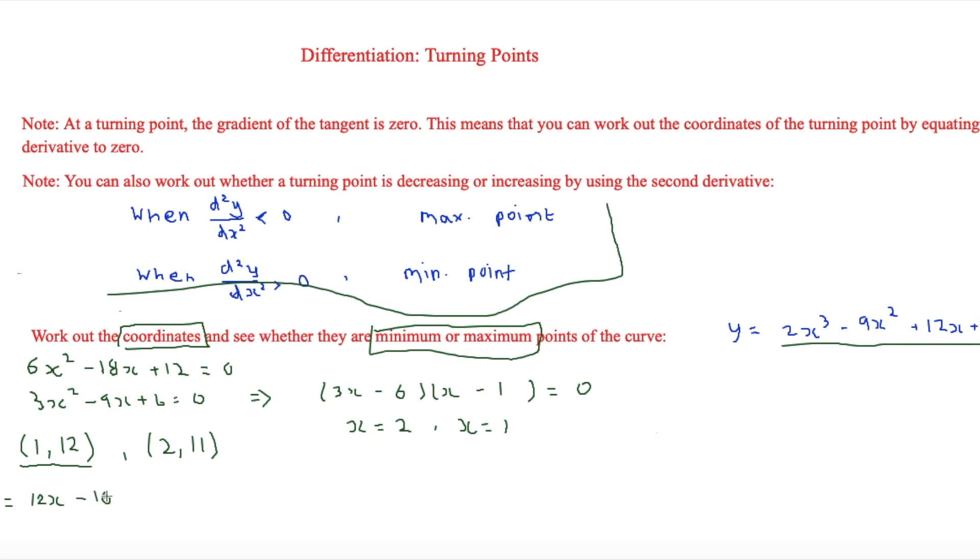And then we'll sub in x from both of them. So we'll do it over in this area here. And then if we sub 1 into it then we get 12 - 18 which is equal to -6.